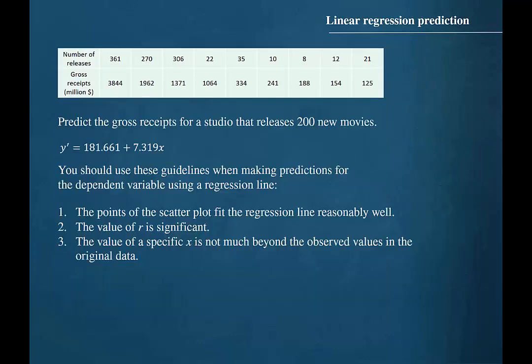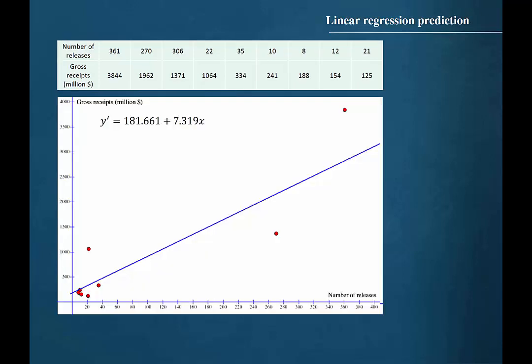The third guideline is that the value of a specific x is not much beyond the observed values in the original data. The x values for this data set span from 8 to 361. An x value of 200 is well within this range.